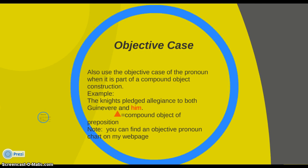You're also going to use the objective case of the pronoun when it's part of a compound object construction. When you look at the example, you'll see it's really not that hard: "The knights pledged allegiance to both Guinevere and him." We have Guinevere and him — that's the compound object of the preposition to. I'm going to show you how to tell quickly and easily which case to use, since it can get confusing and people make a lot of mistakes. I'll put an objective pronoun chart on my teacher webpage and upload it to Edmodo.